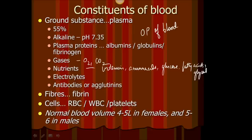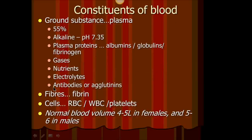We also have electrolytes — potassium, chloride, bicarbonate, hydrogen ions, and calcium. When people are dehydrated or have kidney problems, you test something known as serum electrolytes to see if the body has the normal amount. Also present in the plasma are agglutinins, or antibodies, which are gamma globulins. And then fibrin and cells are present as well.